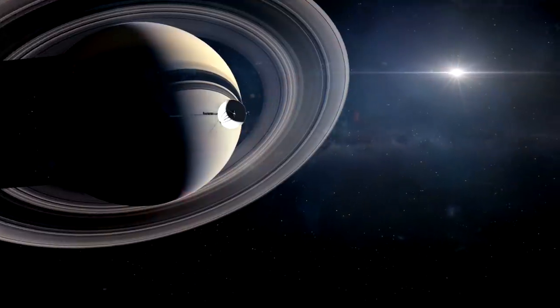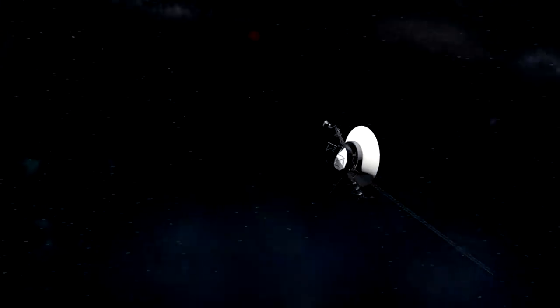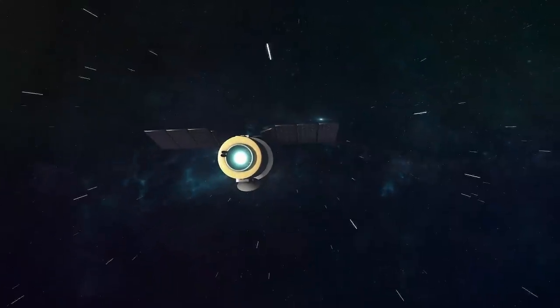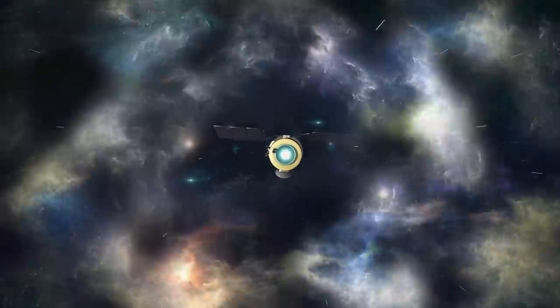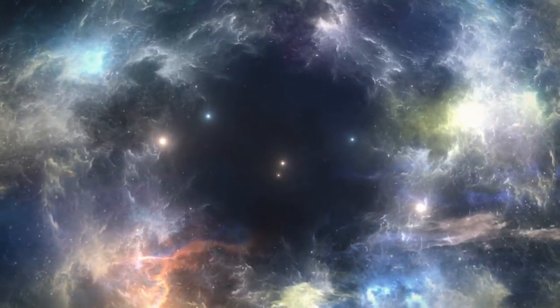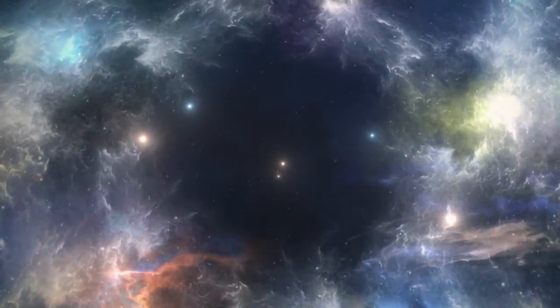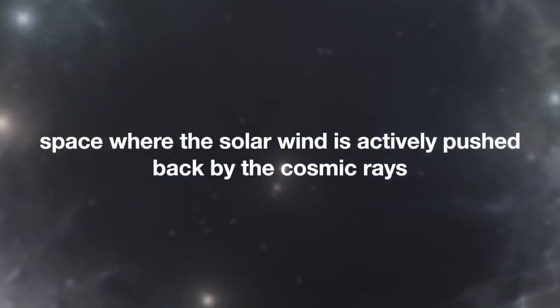As the Voyagers flew by Saturn, they picked up charged particles around its stratosphere. Another such reading came when the Voyager flew in the heliosphere. Perhaps the most remarkable read came when the CRS data confirmed a space where the solar wind was blowing in no direction. That area is now identified as a space where the solar wind is actively pushed back by the cosmic rays.